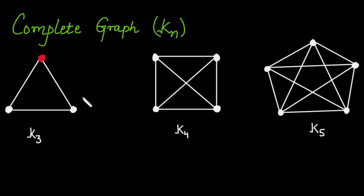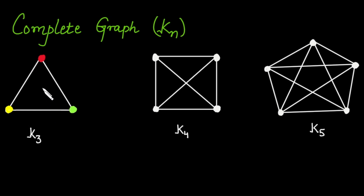We cannot assign red to the adjacent vertex because it is connected to the red vertex, so we need a different color — let's choose green. The next vertex cannot be green or red because it is adjacent to both. So we need to use a different color — let's assign it yellow. Total colors used is 3, so the chromatic number of K3 is 3.